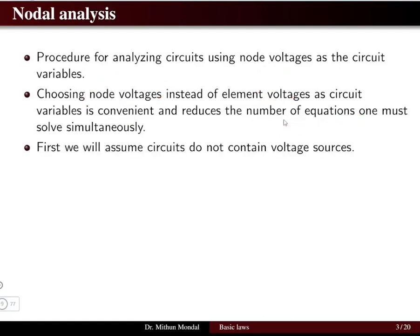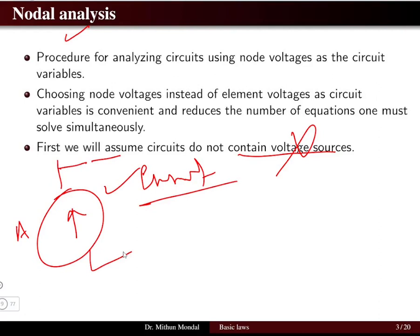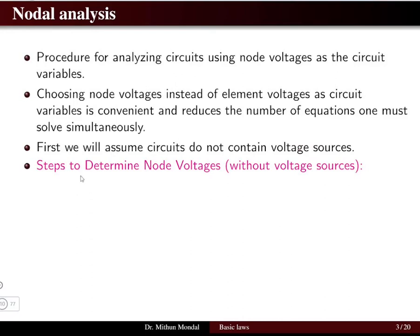First, we will assume the circuit does not contain any voltage source. When discussing nodal voltage initially, we assume only current sources are present in the circuit. The current source drives the circuit and the node voltage is treated as the variable. There are specific steps required to determine the node voltage excluding voltage sources.